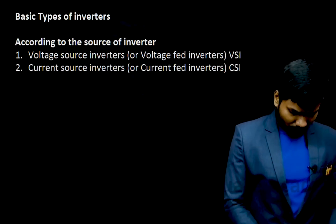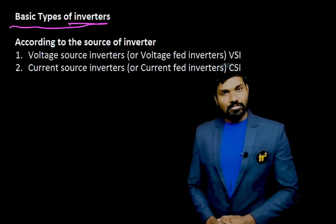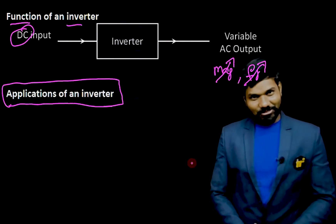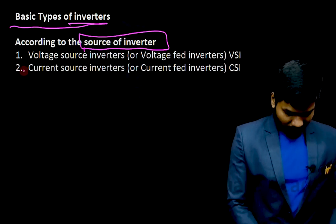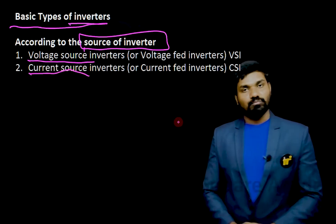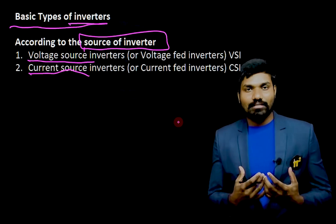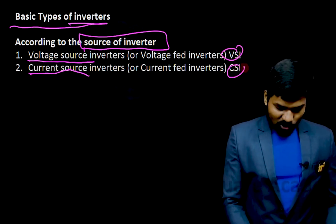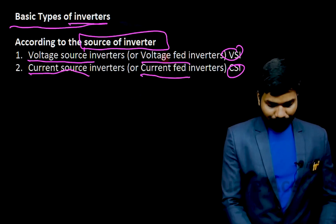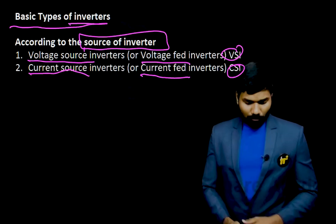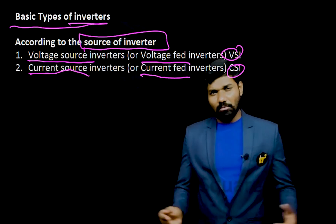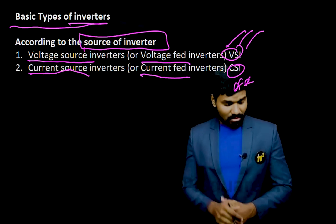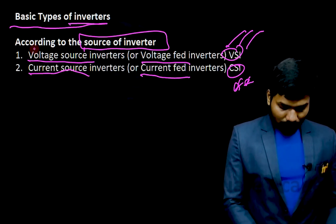Let me give you some basic types of inverters. According to the source of the inverter — it is a DC source, but DC source can be a voltage source or a current source. If it is a voltage source at the DC input, we call it a Voltage Source Inverter (VSI). If it is a current source, we call it a Current Source Inverter (CSI) — also called voltage fed and current fed. VSIs are most commonly used; CSIs are very rarely used for industrial purposes.